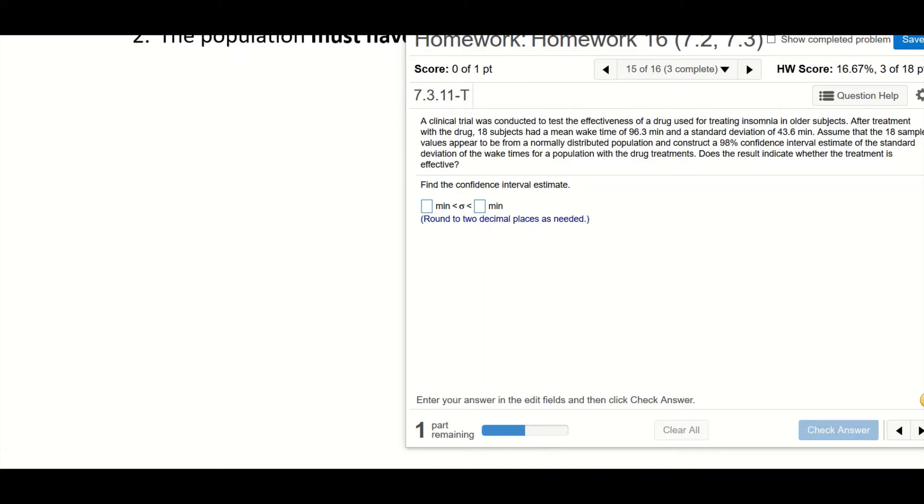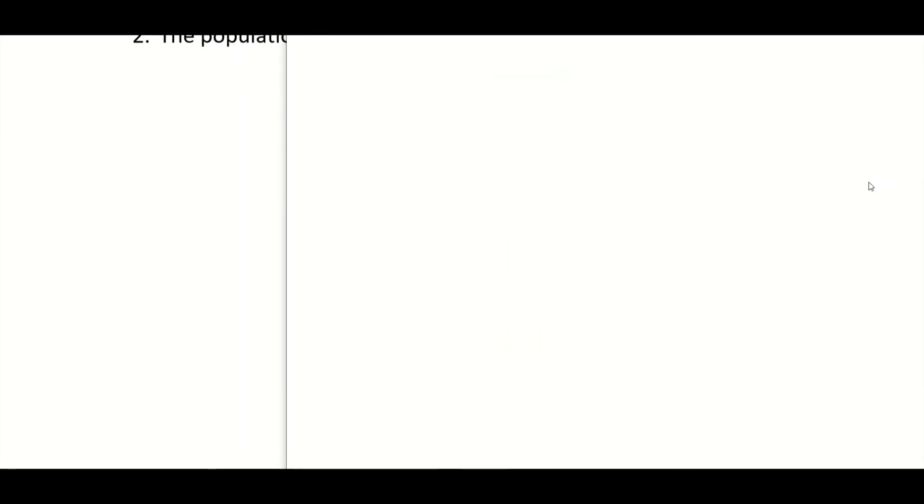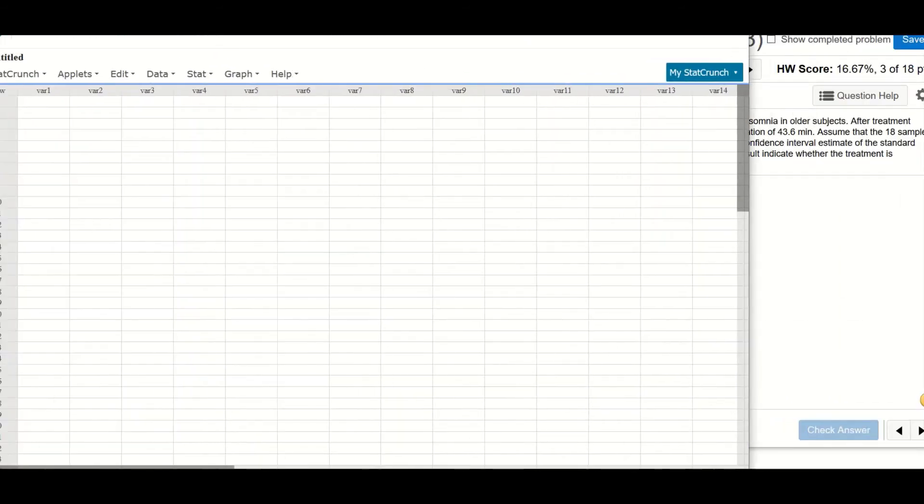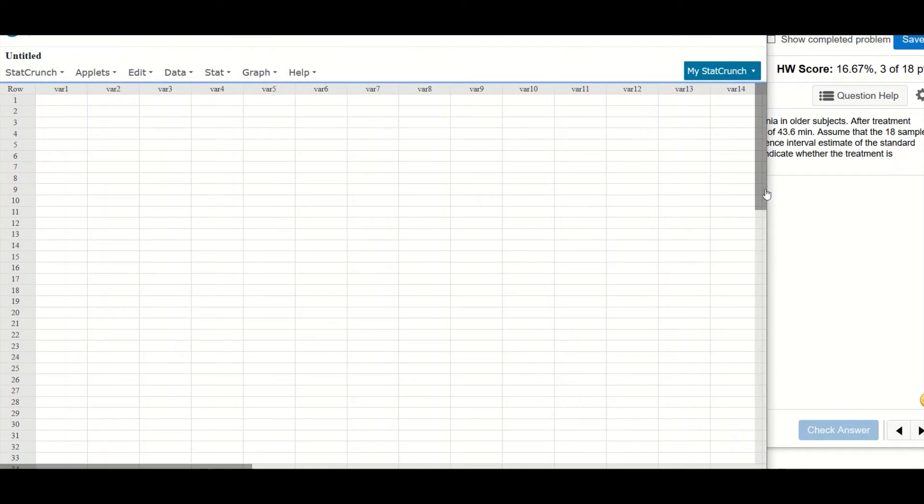Okay, let's look at the first part. Find the confidence interval. So here I'm going to use StatCrunch. You can click here, question help, under StatCrunch. Okay, there it is. All right.